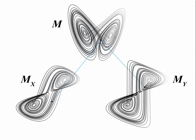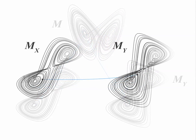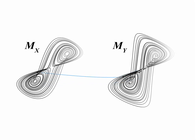This implies that the points that are nearby on the manifold Mx correspond to points that are also nearby on My. We can demonstrate this principle by finding the nearest neighbors in Mx and using their time indices to find the corresponding points in My. These points will be nearest neighbors on My only if x and y are causally related.